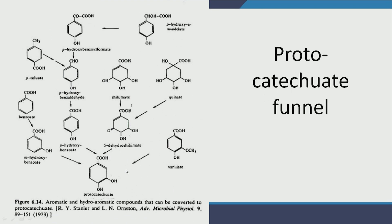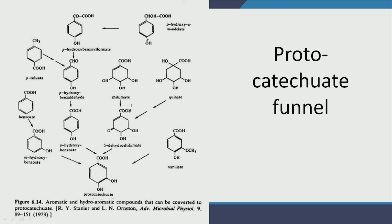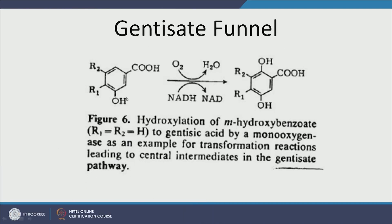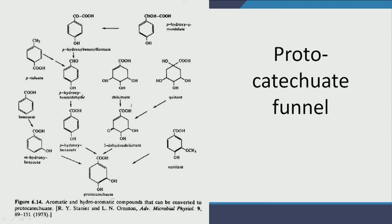There is also a protocatechuate funnel, which is like catechol but with a COOH group attached. Some aromatic compounds undergo the protocatechuate pathway instead. Additionally, there is the gentisate funnel — many other aromatic compounds undergo the gentisate pathway, where an OH group is added enzymatically to lead them toward gentisate. So different aromatic compounds can undergo the catechol, protocatechuate, or gentisate pathway.